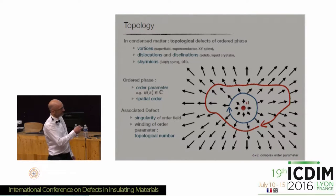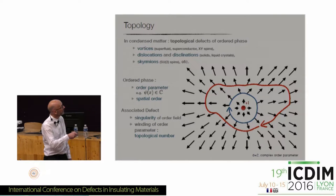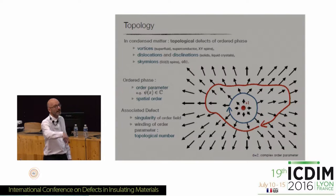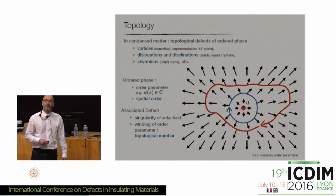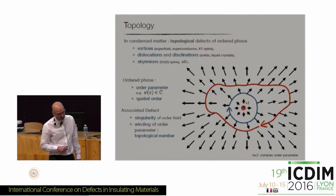In this case, whatever the path you consider that winds clockwise around my defect, the phase arrows also wind once around this defect — that's a plus-one vortex. So that's what people learned in the 1970s: how to classify all possible defects for these order parameter fields.